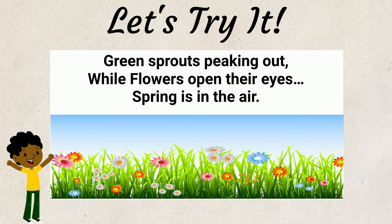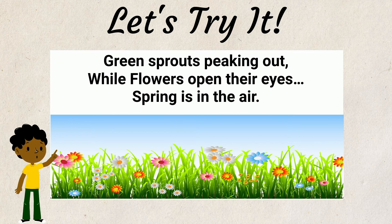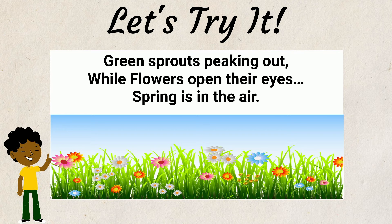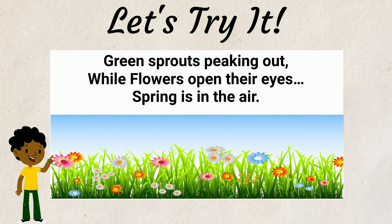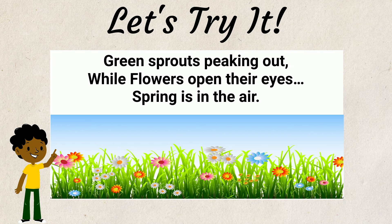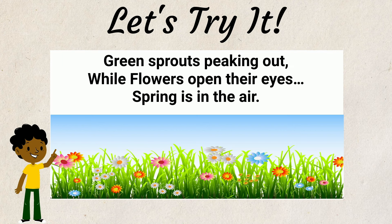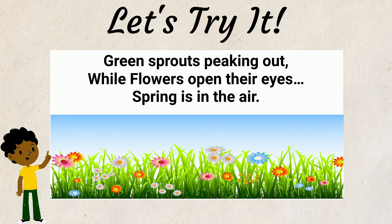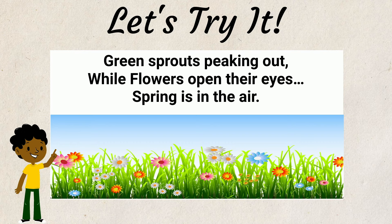All right! I just wrote a haiku poem. I wrote about a theme from nature. I used words that were specific to my topic. I used imagery to help my readers imagine my poem in their minds. And I followed the correct structure to bring my words together.